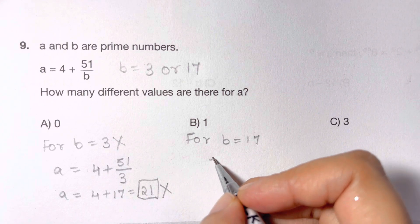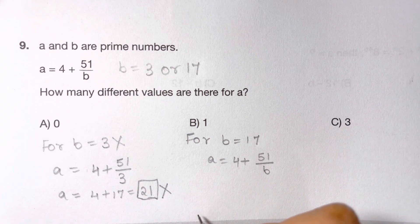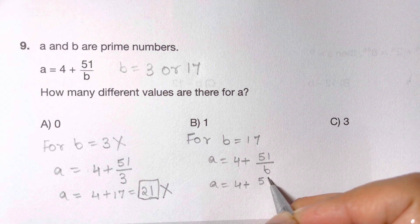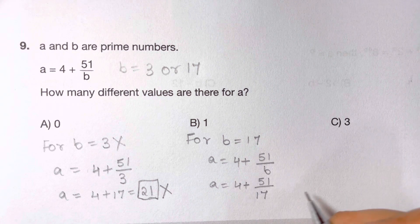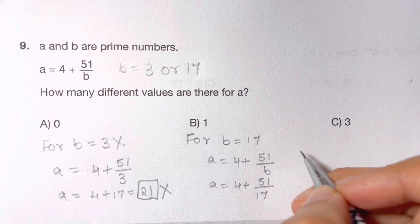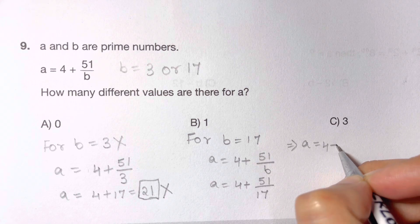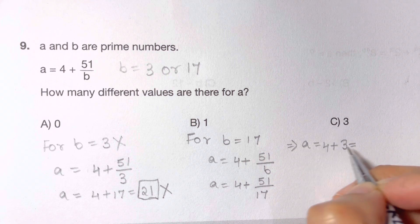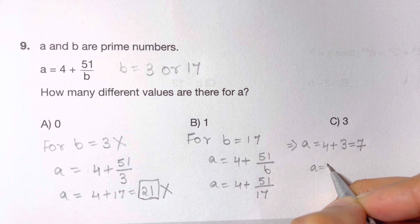For B equals 17, A equals 4 plus 51 over 17. 51 divided by 17 is 3, so 4 plus 3 equals 7, and A equals 7.